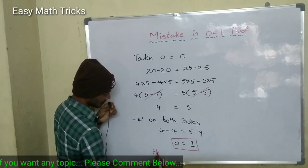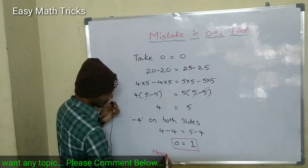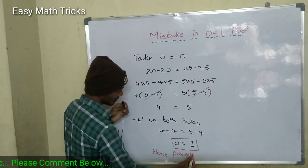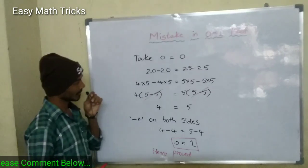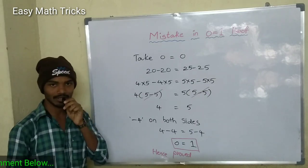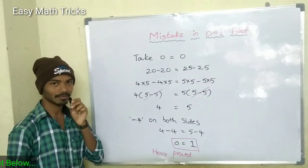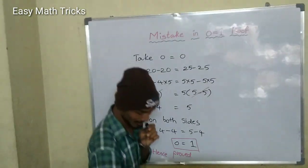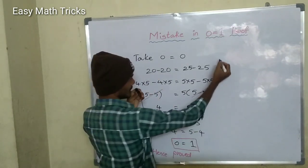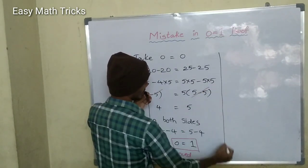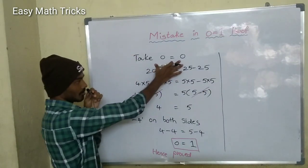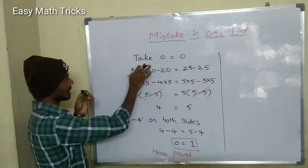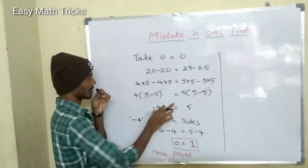Hence, proved. Do you want to try to find the mistake? Let me show you. The mistake is: 0 is equal to 0, no problem. Let me show you — 0 is equal to 0, no problem.